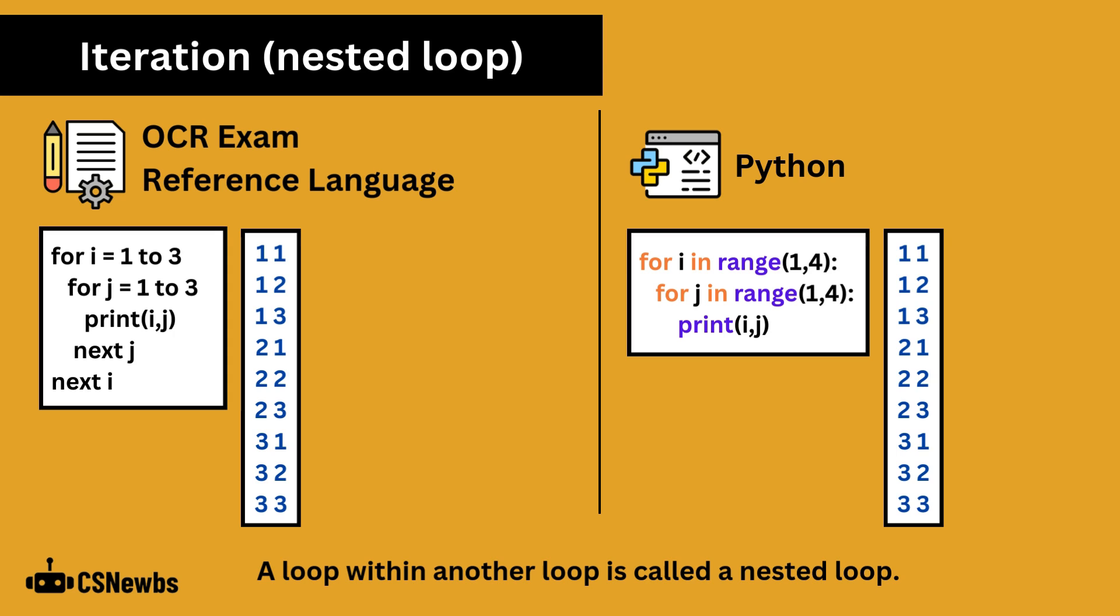A loop within another loop is called a nested loop. In a nested loop, the inner loop runs to completion every time the outer loop runs once. You can see the J loop runs from 1 to 3, while the I loop is at 1. Then it runs from 1 to 3 again, while the I loop is at 2, and then again when I is 3.